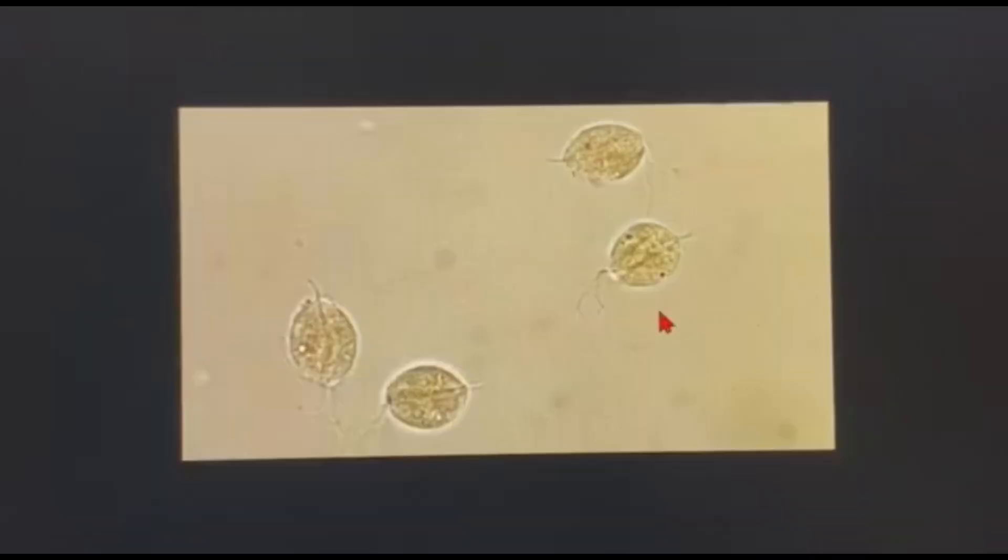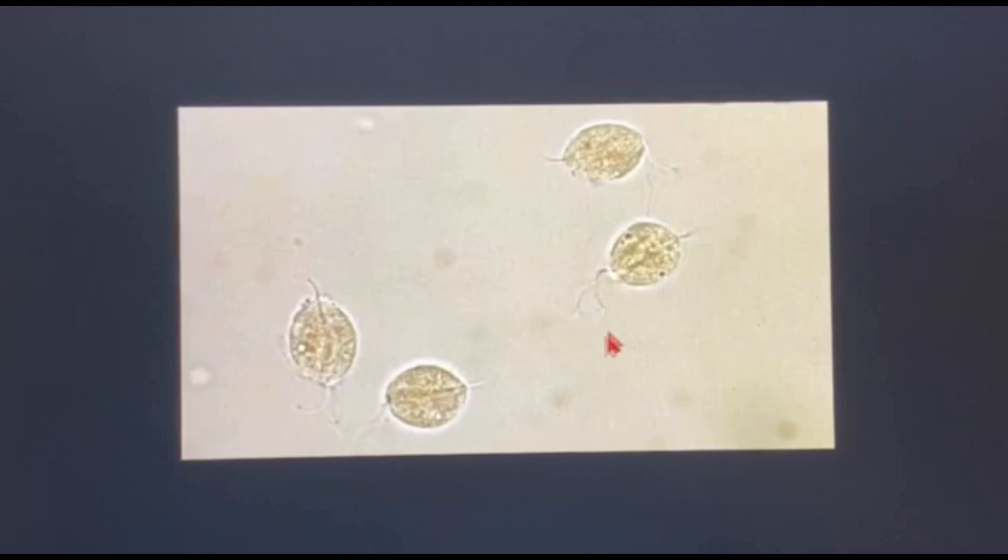This is how it appears in a wet mount. You can see the flagella or the undulating membrane here. You can see the body which is not like the racket-shaped as in Giardia. And yes you won't find the scary eyes, aka the nuclei here.